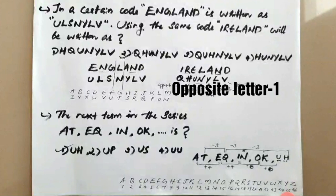For the consonants: T is 20, Q is 17 — that is minus 3. So the consonant series decreases by 3. The next consonant after K (11) is 11 minus 3 = 8, which is H. So the next term gives us U and H — that is the answer.